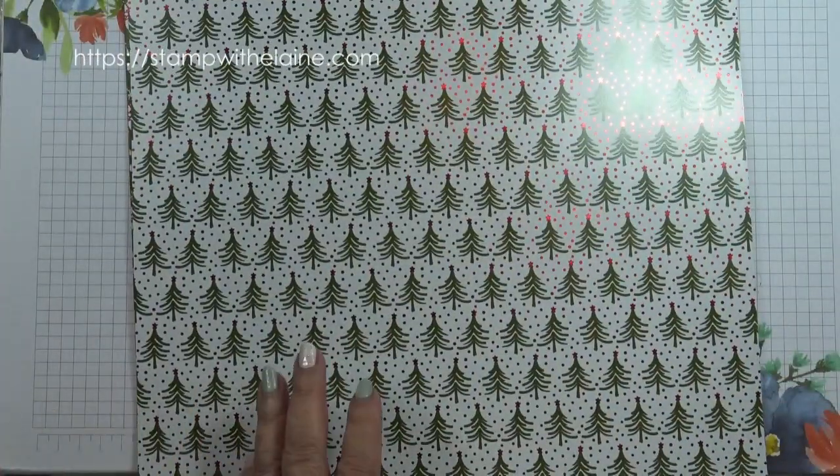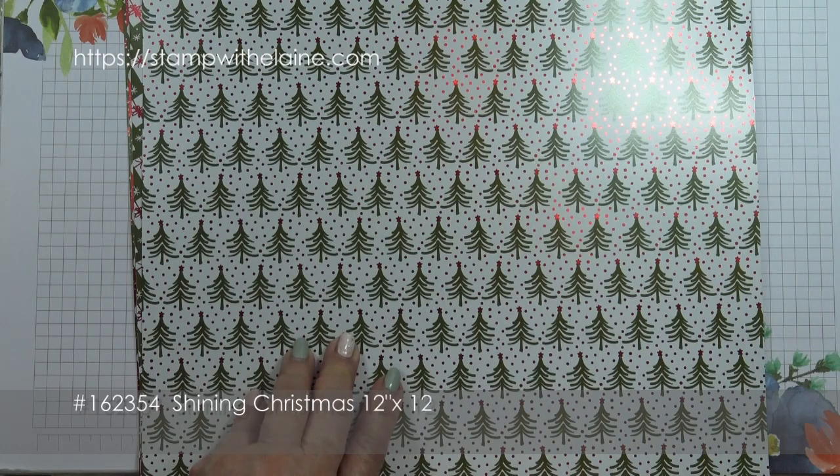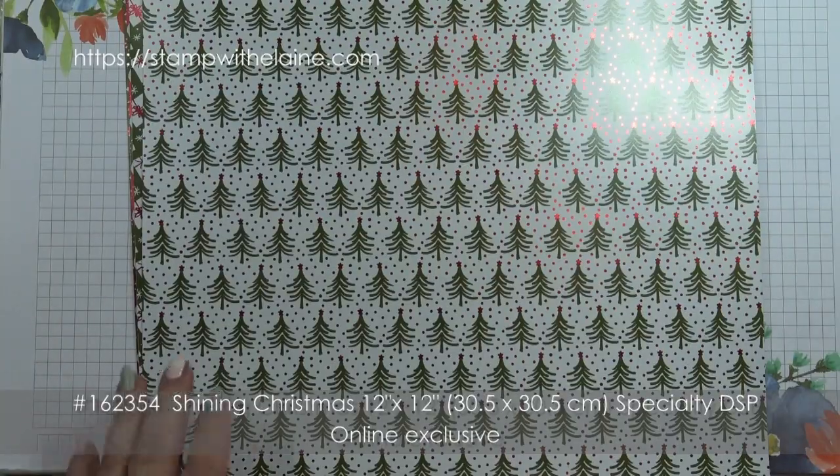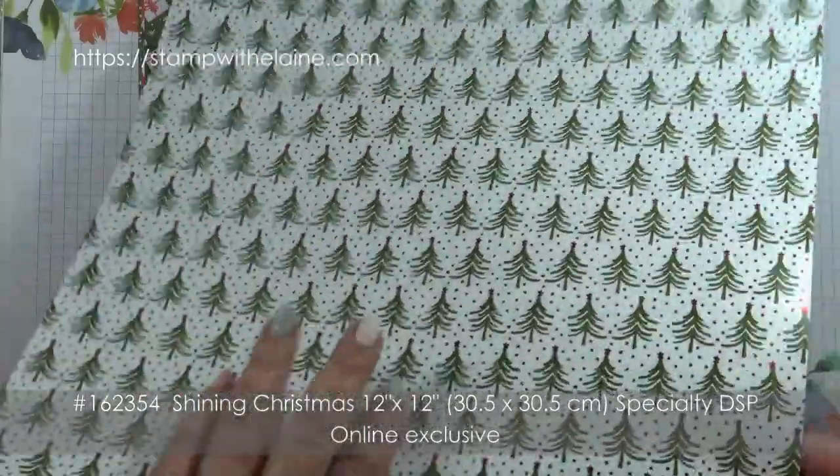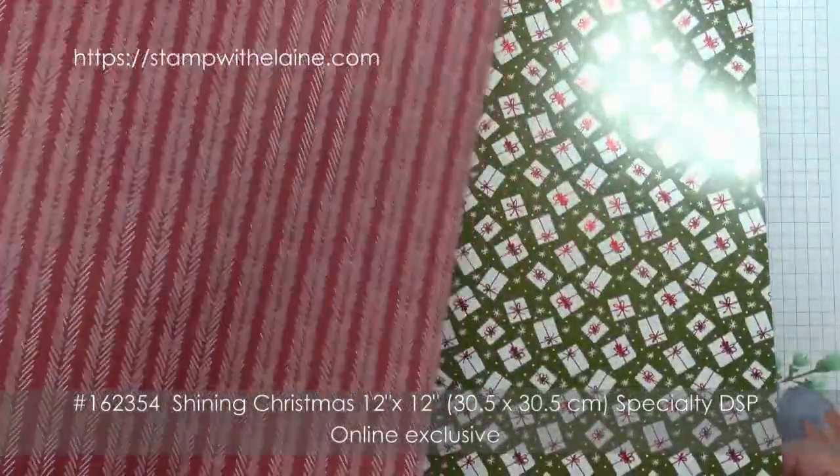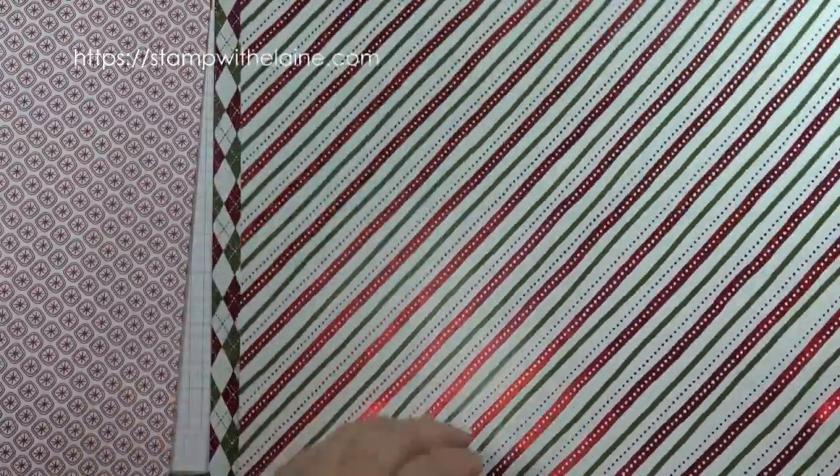I'm also using the shining Christmas 12x12 or 30.5 by 30.5 centimeter specialty designer series pack. It's shiny on one side, just Christmas trees, and that's the reverse. Next we have the presents and that's the reverse. It's all in traditional Christmas colors, so it's red, green, and white.